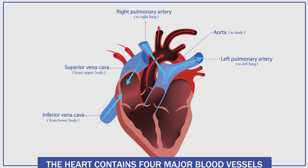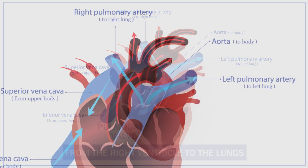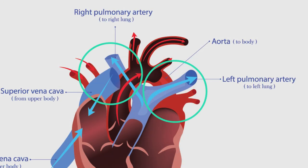The heart also contains four major blood vessels that supply the heart with deoxygenated and oxygenated blood. These are the pulmonary artery, the aorta, the superior vena cava, and the inferior vena cava. The pulmonary artery is responsible for transporting deoxygenated blood from the heart's right ventricle to the lungs.